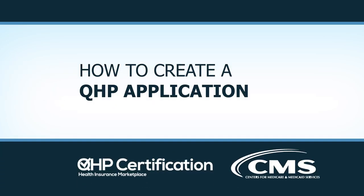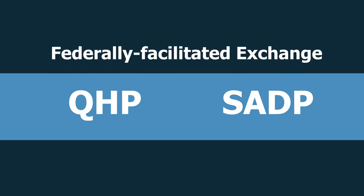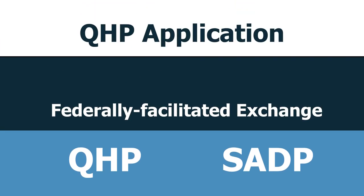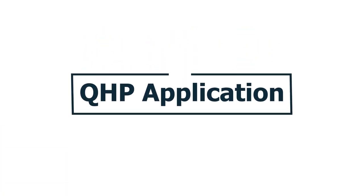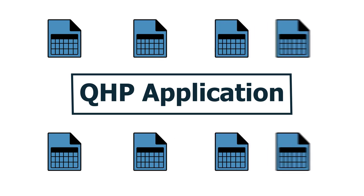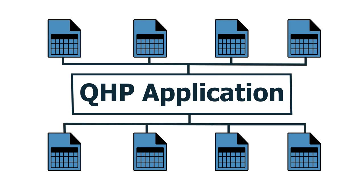How to Create a QHP Application. Issuers seeking to offer qualified health plans, or QHPs, including stand-alone dental plans, or SADPs, on the federally-facilitated exchange must submit a completed QHP application per CMS guidelines. As part of the QHP certification process, issuers are asked to fill out several templates with issuer and plan-level data. These templates, along with any supporting documentation submitted, comprise an issuer's QHP application.